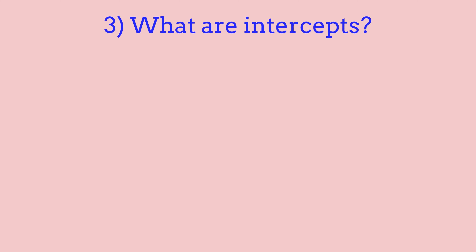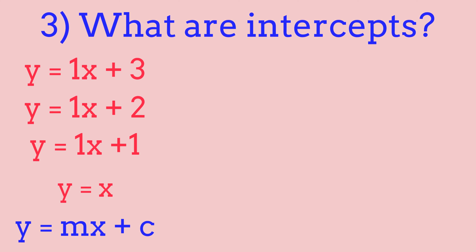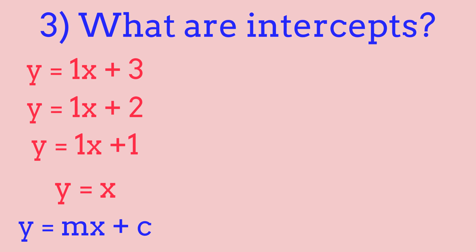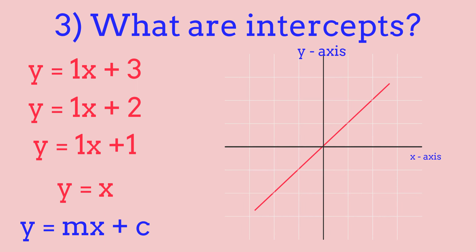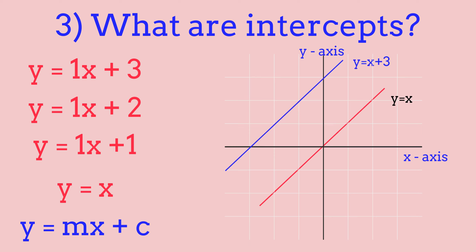Now we're moving on to linear equations with constants. The standard form is y equals mx plus c. When we add a constant, all we need to do is move our line up or down on the y-axis depending on the constant's value. If the constant is plus 3, we go up 3 on the y-axis; if it's minus 3, we go down 3. So if the constant is negative 6, the line goes down to negative 6, and if it's plus 6, it goes up 6 on the y-axis. This works with any constant, including negative slopes.